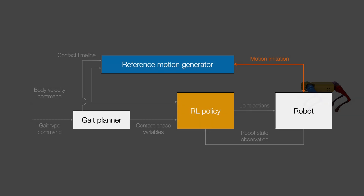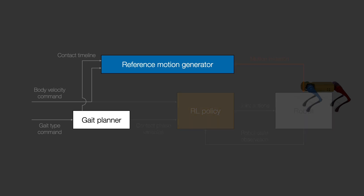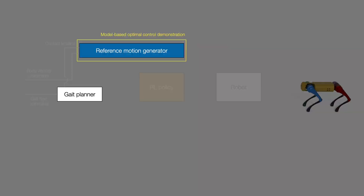In our approach, we designed an RL task aimed at replicating motions from a reference motion generator. The reference motion generator produces a sequence of reference motions over a time horizon that follows the body velocity command and the contact timeline. It produces dynamically coherent reference motions by solving a finite horizon optimal control problem using a simplified robot model.